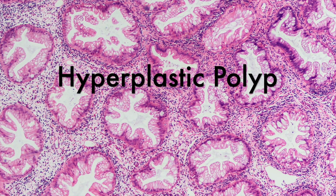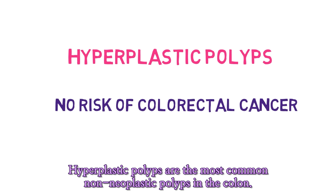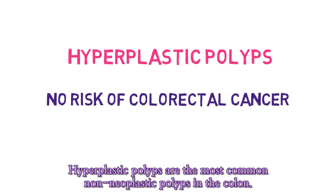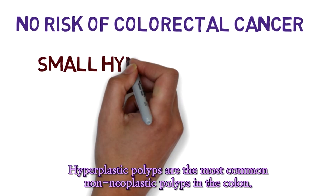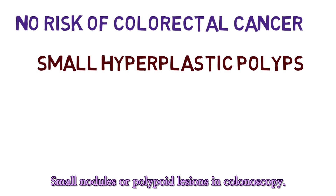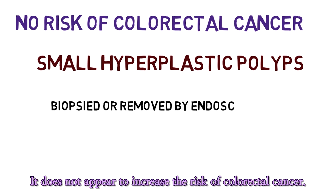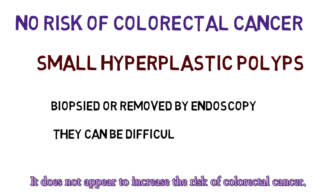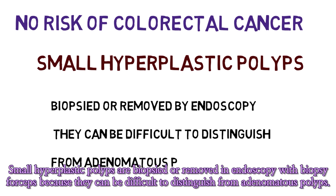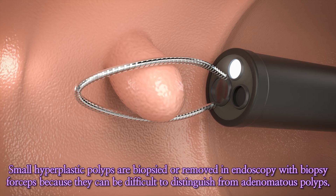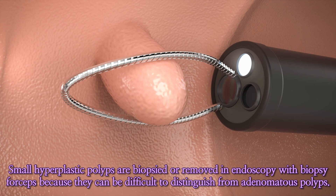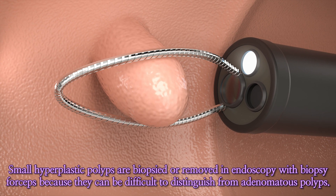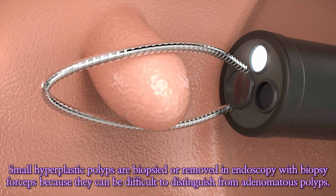Hyperplastic polyps. Hyperplastic polyps are the most common non-neoplastic polyps in the colon. They appear as small nodules or polypoid lesions in colonoscopy. They do not appear to increase the risk of colorectal cancer. Small hyperplastic polyps are biopsied or removed in endoscopy with biopsy forceps because they can be difficult to distinguish from adenomatous polyps.